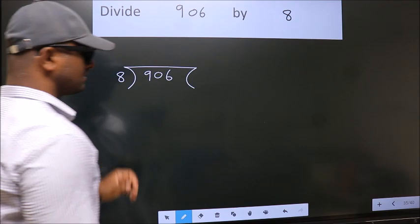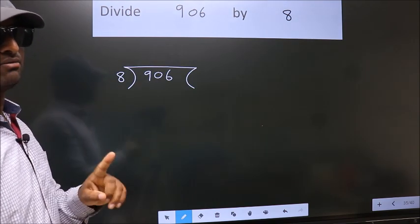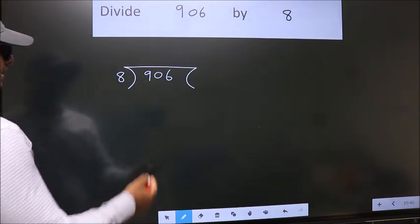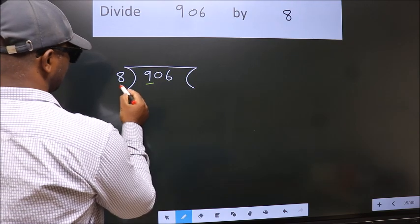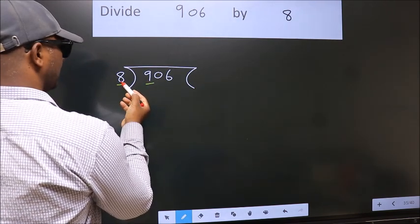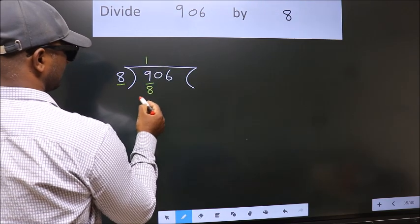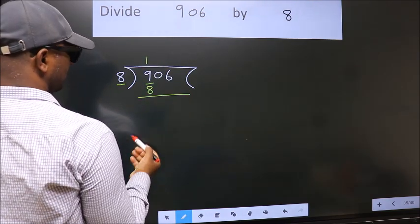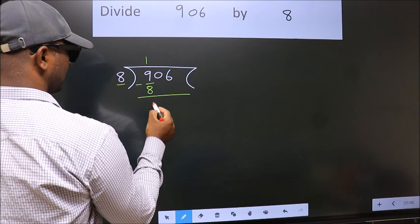This is your step 1. Next, here we have 9, here 8. A number close to 9 in 8 table is 8 once 8. Now, we should subtract. We get 1.